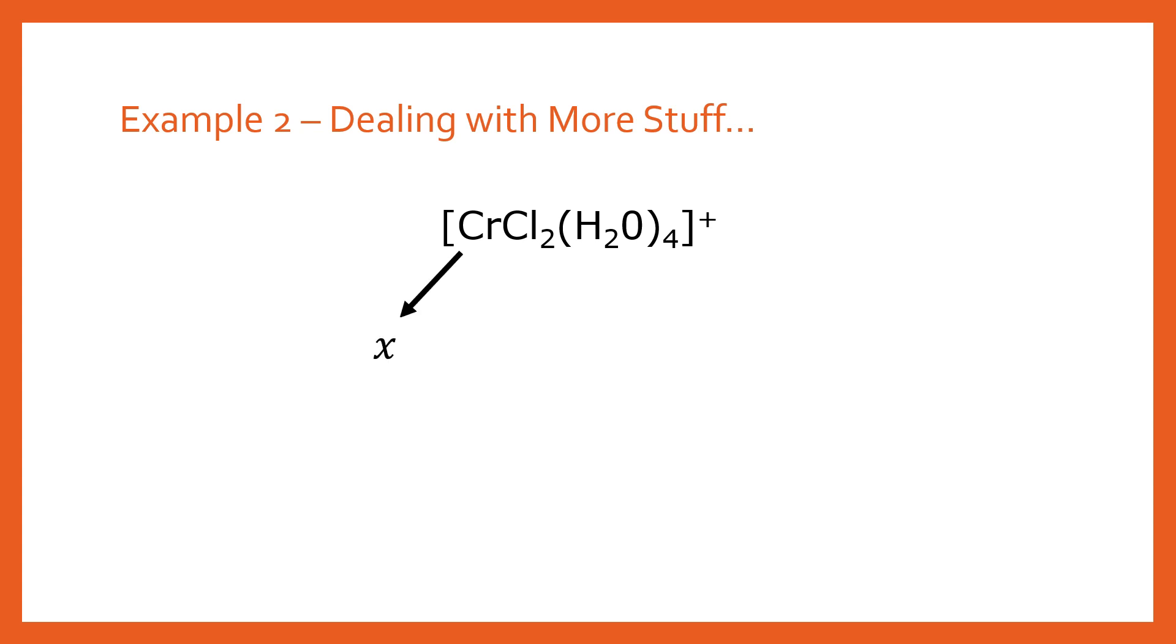So again we've got the chromium and that's going to be just x. Then we've got the chlorine. We've got two of those. Chlorine is of course minus one oxidation state. So we do two times minus one.